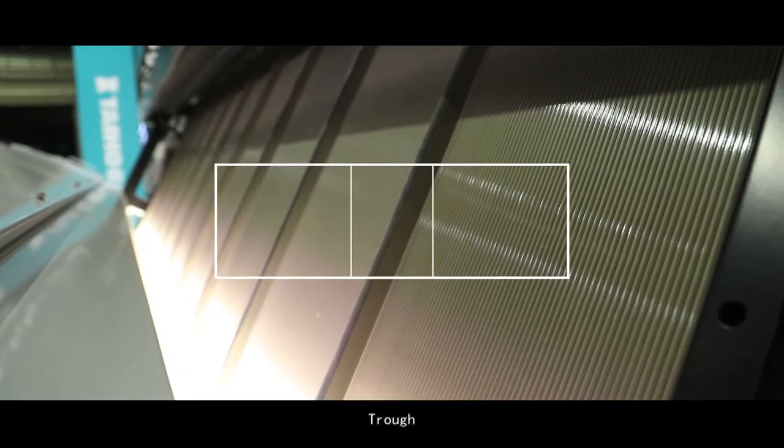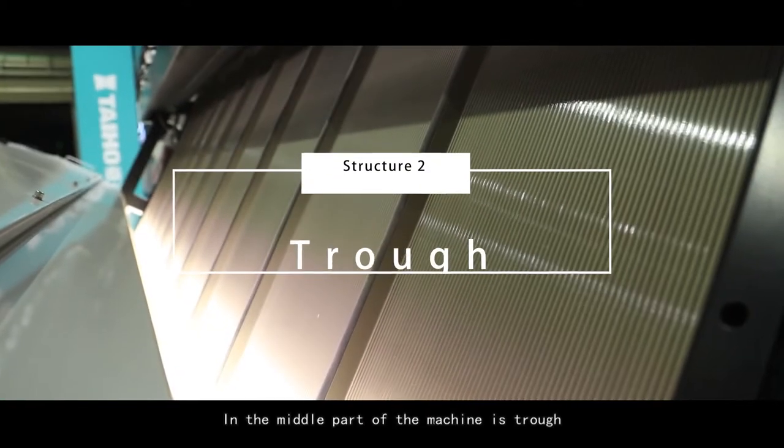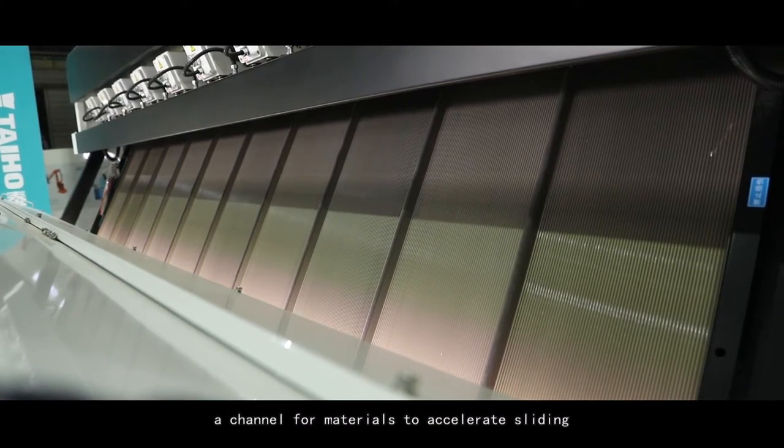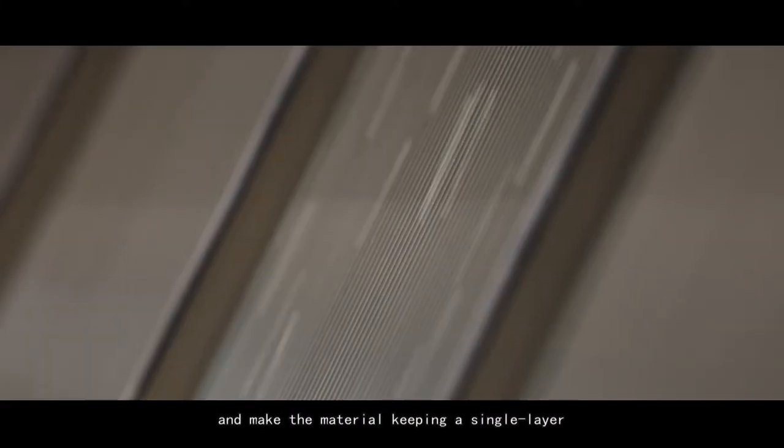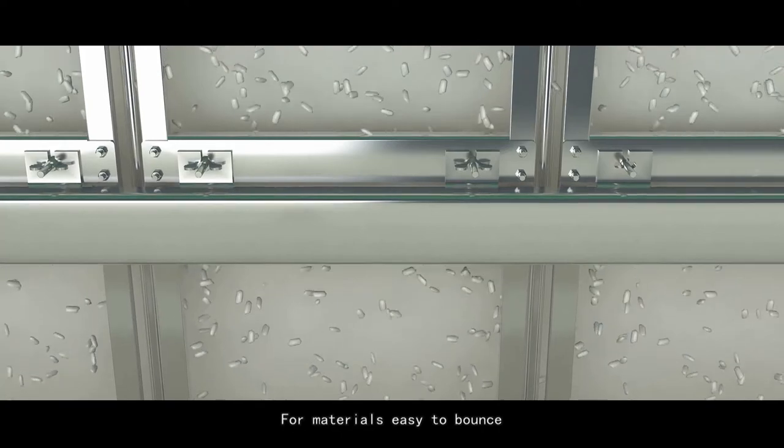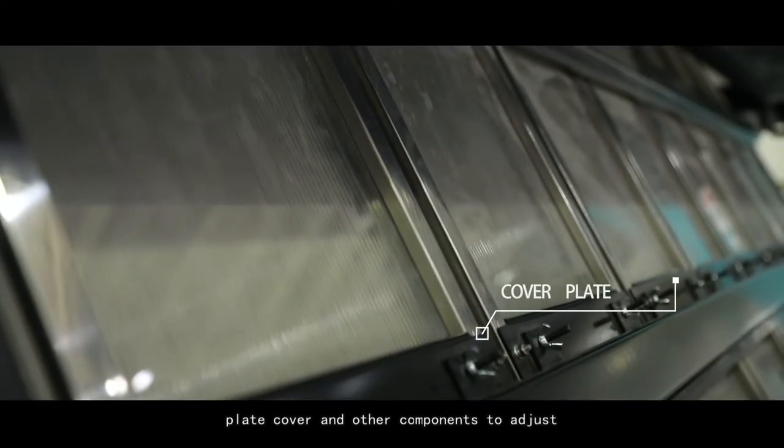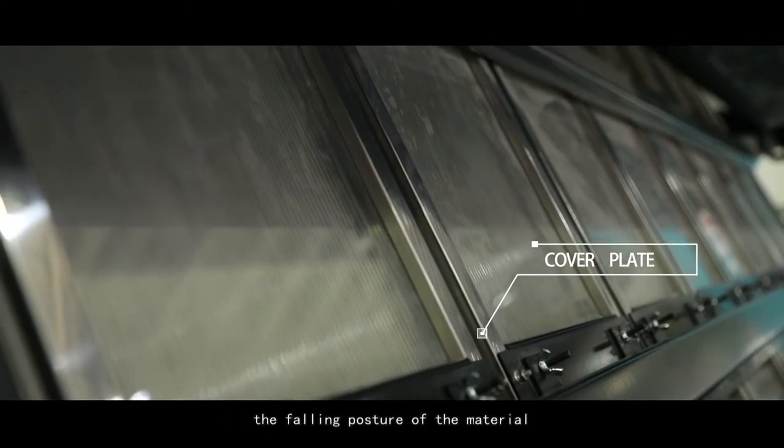Trough. In the middle part of the machine is trough. The main function of trough is to provide a channel for materials to accelerate sliding and make the material keeping a single layer distribution posture when it leaves the shoot. For materials easy to bounce, we will also use leather cover, plate cover and other components to adjust the falling posture of the material.